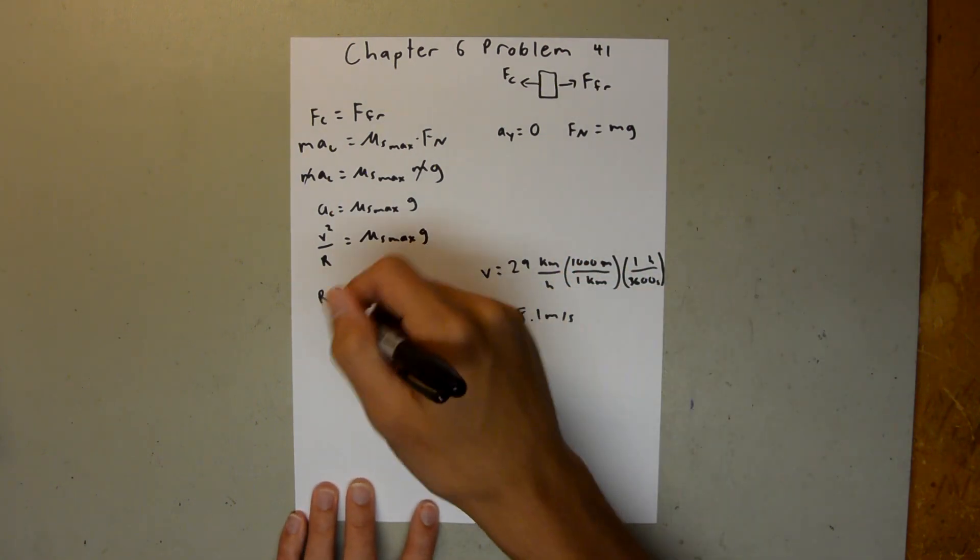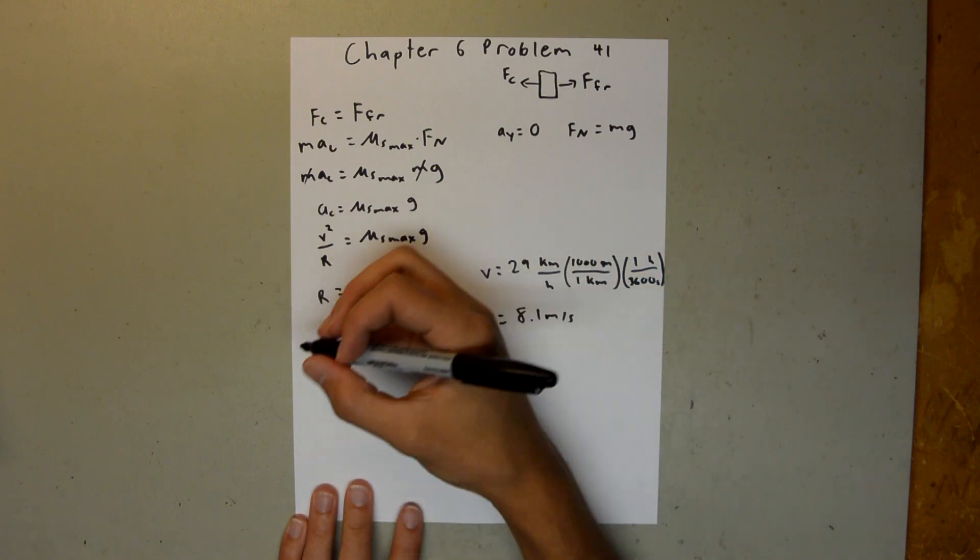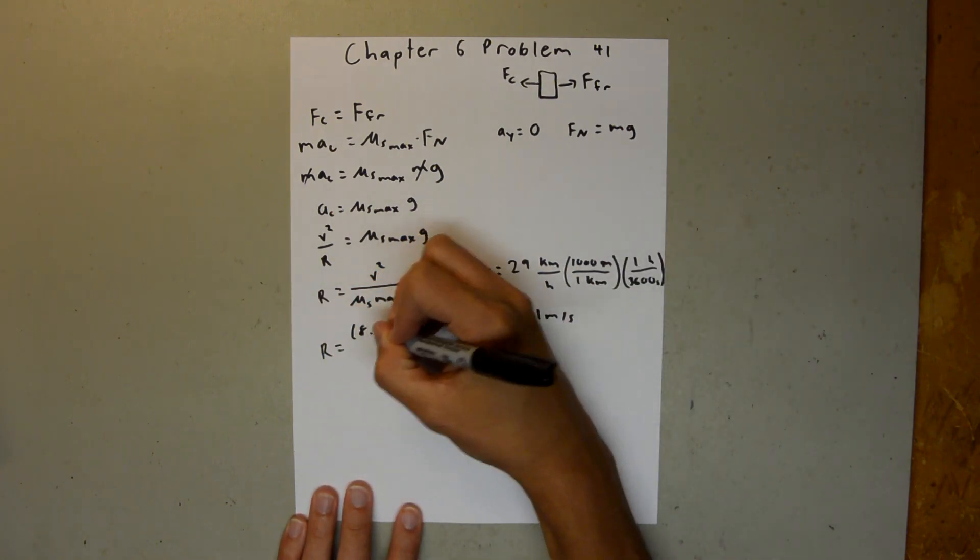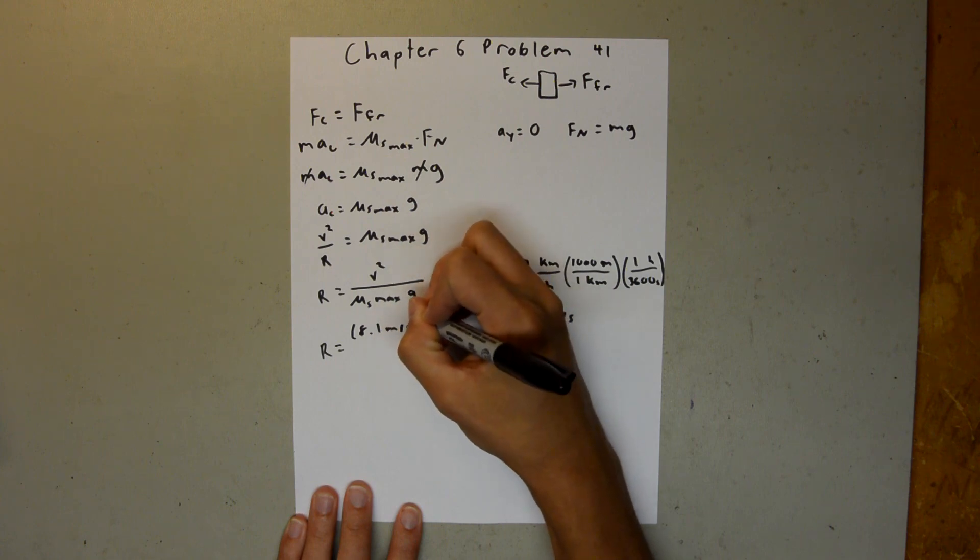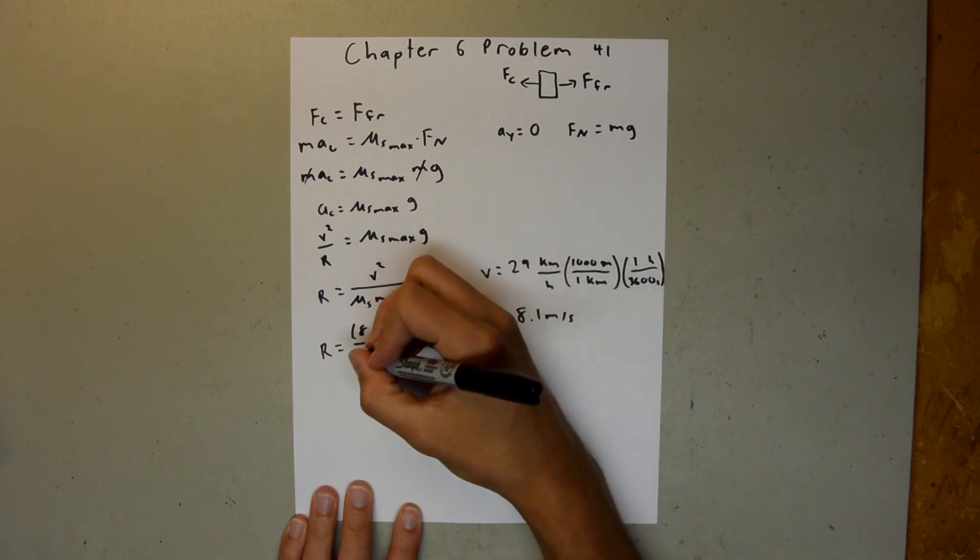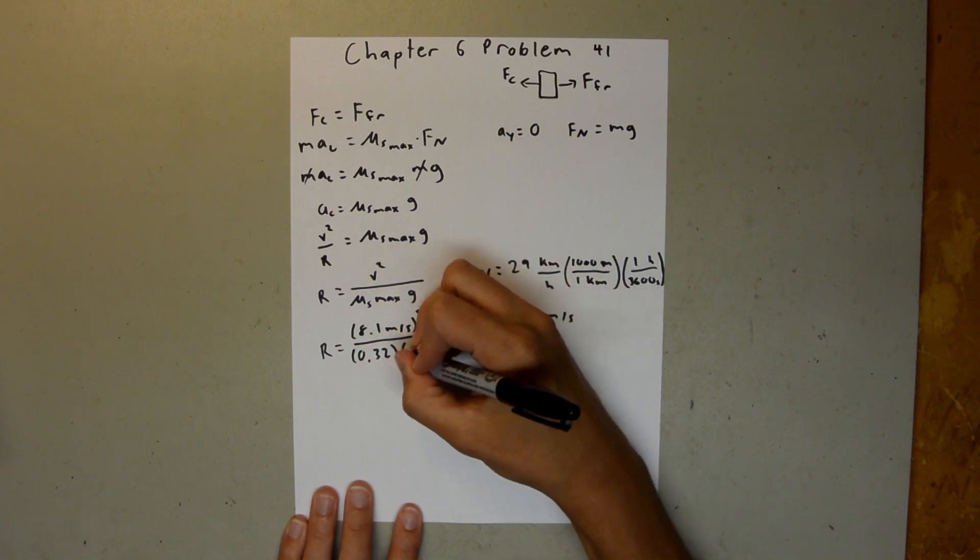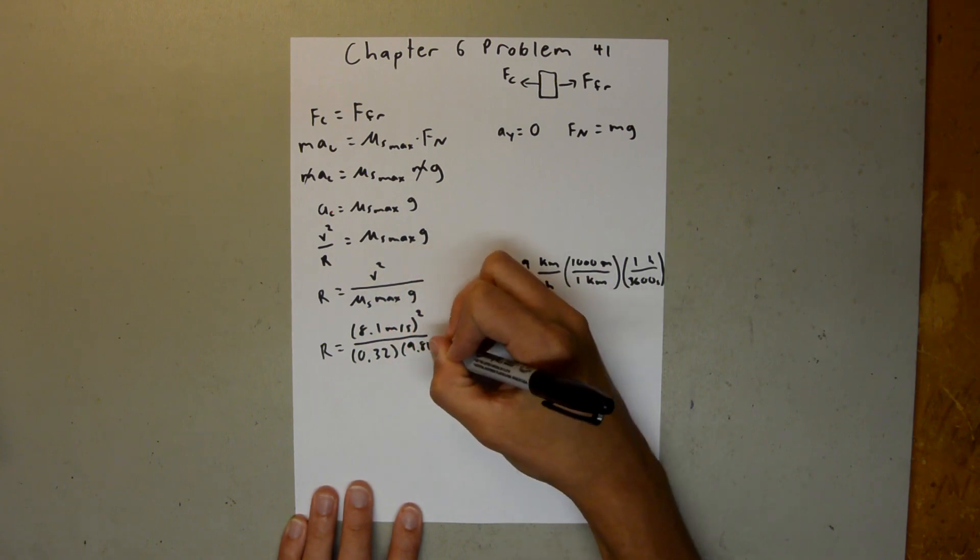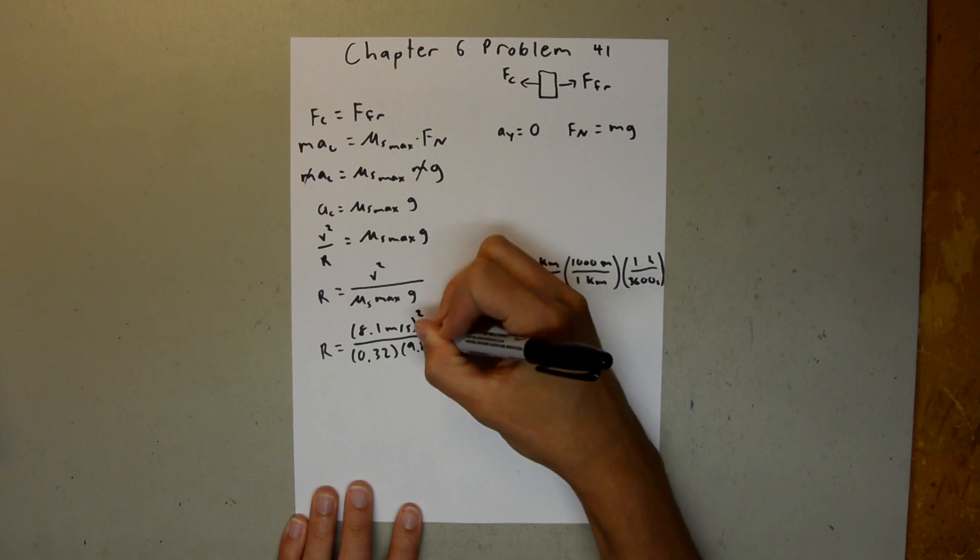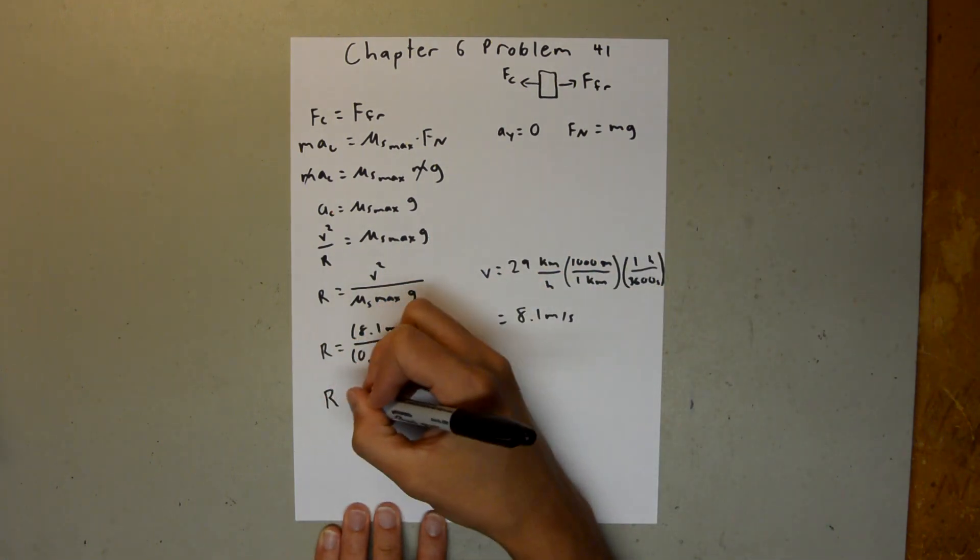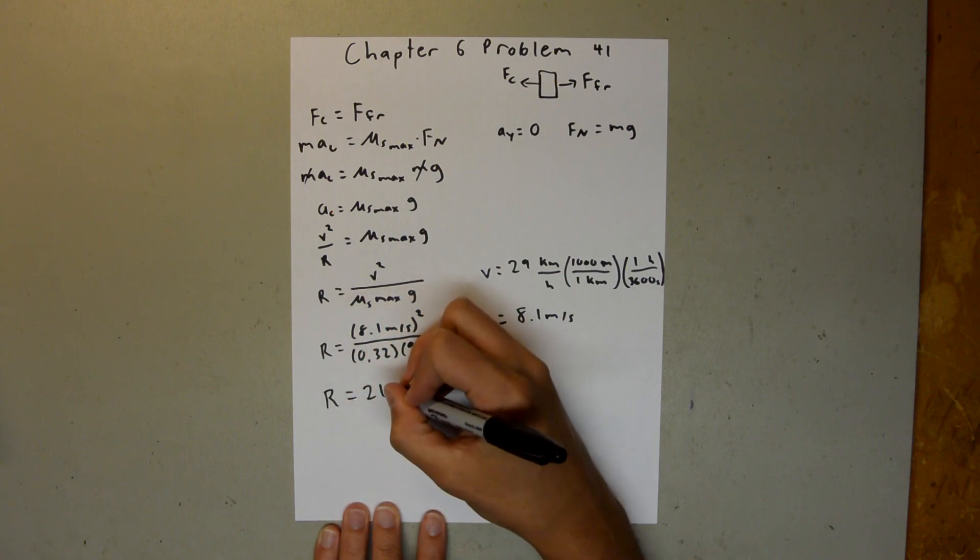And so now we have all the values we need to plug into this equation. So we can say r is equal to 8.1 meters per second squared divided by 0.32 times 9.81 meters per second squared. And when you plug all that into your calculator, you should get the radius is equal to 21 meters.